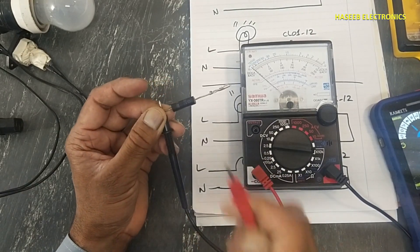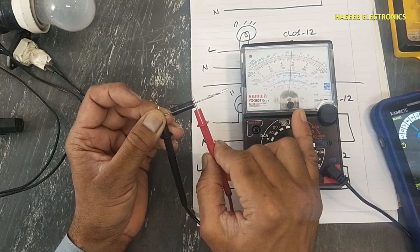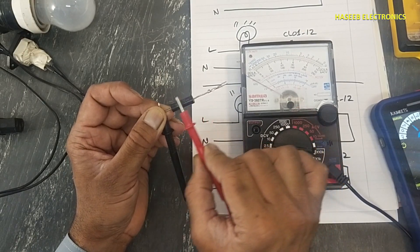Now connect one lead here. It is giving forward resistance, diode is conducting.